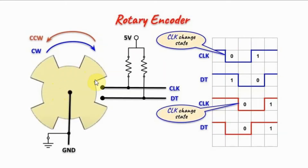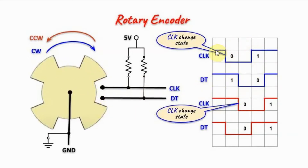When we rotate the gear clockwise, the cog will first make contact with the clock line, pulling the signal low. Then the cog will make contact with the data line, pulling it low. As we continue with the clockwise rotation, this would be the output signal from the clock and data lines.